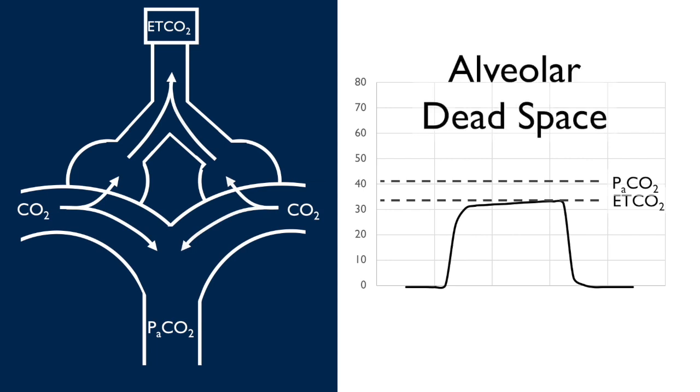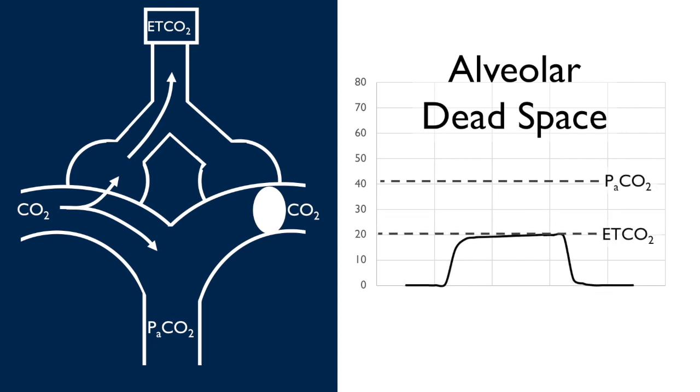To demonstrate this, let's add some dead space to our diagram and see what happens. On the right, there is no alveolar CO2 because there is no perfusion to this alveolus. On the left, the alveolar CO2 is reflective of the arterial CO2. Once these two mix and make it to our carbon dioxide detector, there is a substantial amount of dilution and the end-tidal CO2 decreases significantly, causing a large gap between the end-tidal and arterial CO2.